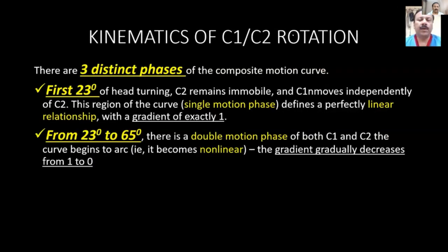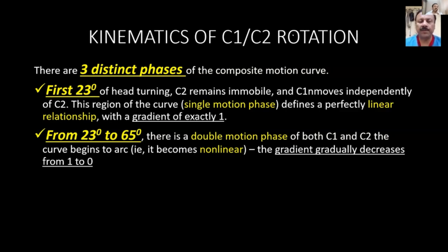Now let us look at the kinematics of C1-C2 rotation. There are three distinct phases: in the first 23 degrees, C1 moves alone; in the next 23 to 65 degrees, both C1 and C2 move, with C1 moving more than C2; and beyond 65 degrees, C1 and C2 move together.